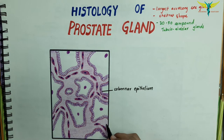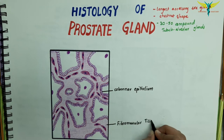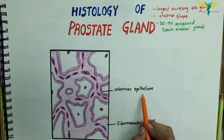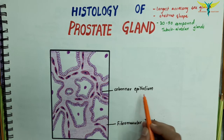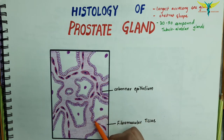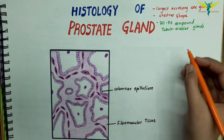The fibromuscular tissue forms the stroma. The epithelium is thrown into numerous folds, and these follicles drain into 12 to 20 excretory ducts that open into the prostatic urethra.